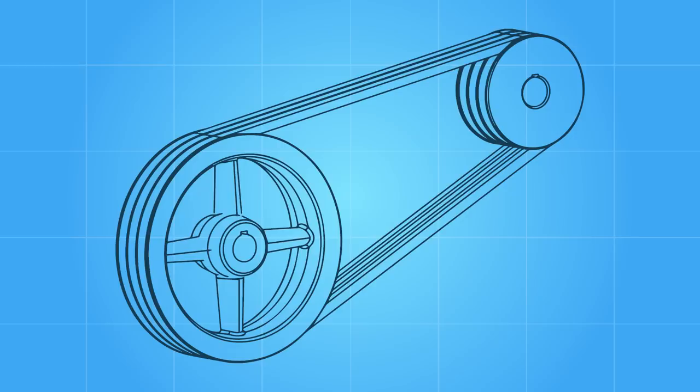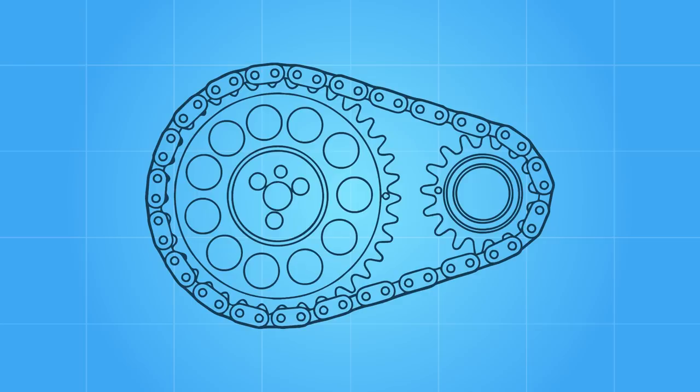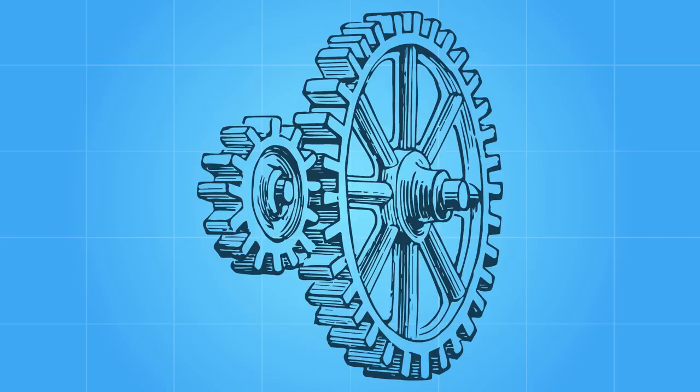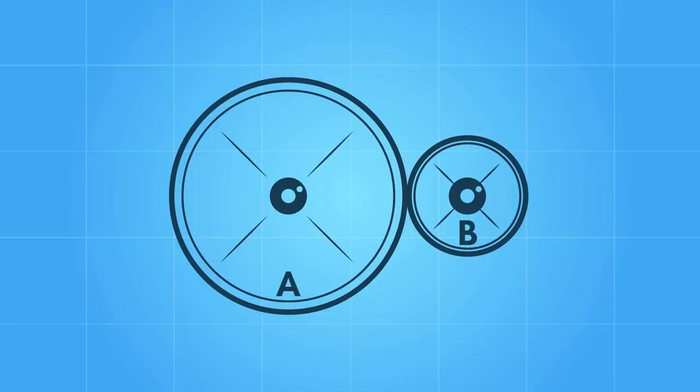If we link two wheels together by a belt, chain or a force transmitting feature such as teeth, we create a pulley, sprocket or a gear. Linking wheels together allow us to multiply torque to rotational speed and vice versa, in predetermined ratios.